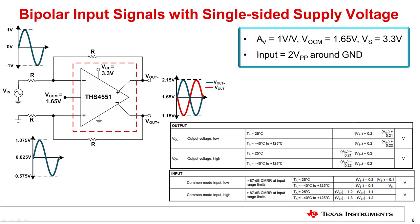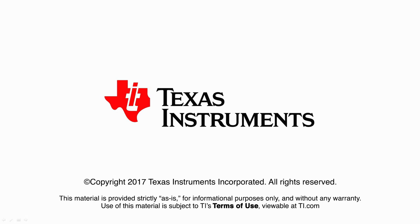The signal at the input and output of the FDA will depend on the following factors: the magnitude of the input signal and its common mode, the amplifier's gain configuration, and the output common mode of the FDA. This concludes the common mode and differential signal analysis of the FDA.